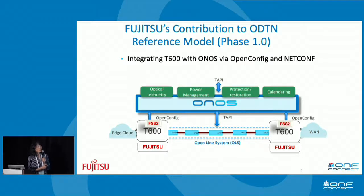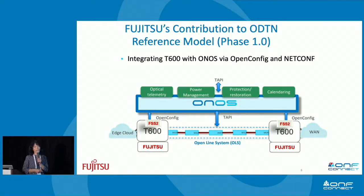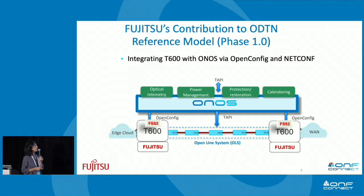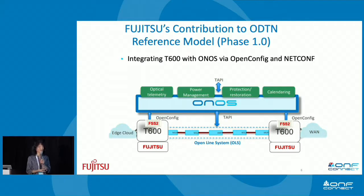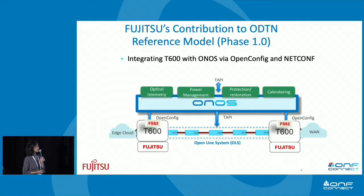Now, coming to the reference model with ONOS: we successfully integrated the Fujitsu T600 transponder — offering 600 Gbps in a book-ended transponder — through an optical line system to ONOS. ONOS, as Andrea demonstrated in the booth, is able to discover the T600 using OpenConfig through NETCONF and see the ports. That integration was actually very smooth and quick — we only took two weeks. The person who did it is relatively junior too, which demonstrates that the ONOS architecture is very user-friendly.